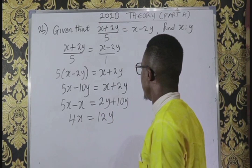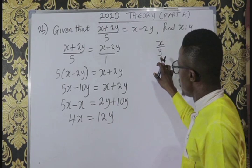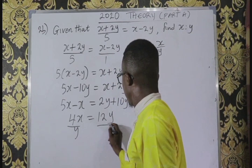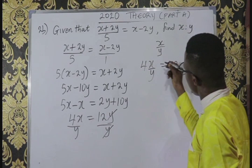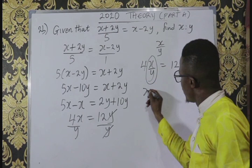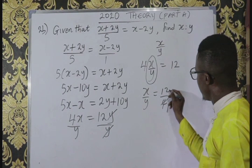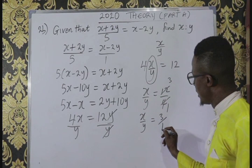Now we are asked to get x is to y. X is to y is the same thing as x over y, which means we are dividing by y. So divide both sides by y — y cancels y — giving us 4x over y equals 12. We need x over y, so divide both sides by 4. X over y is 12 over 4, which equals 3 over 1. Therefore, x is to y equals 3 is to 1. That is the answer.